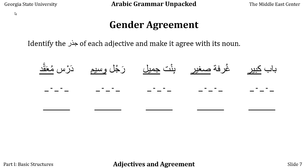We're going to identify the jidhr of each adjective — the root — and make it agree with its noun. In the first row, we have bab kabir. The jidhr of kabir, since most simple adjectives have the fa'il wazn, is kaf-ba-ra. Since bab is a masculine singular noun, we need a masculine singular adjective, so we don't have to do anything to kabir — it's already masculine singular.